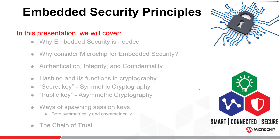In this presentation, we will cover why embedded security is needed, why consider Microchip for embedded security, we'll cover authentication, integrity, and confidentiality, we'll cover hashing and its functions in cryptography, secret key — also known as symmetric cryptography — public key, also known as asymmetric cryptography, ways of spawning session keys both symmetrically and asymmetrically, and we'll also cover the chain of trust.